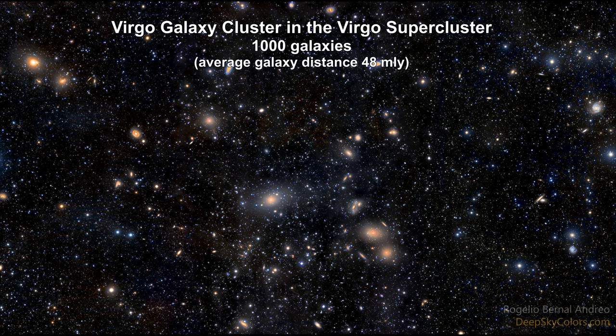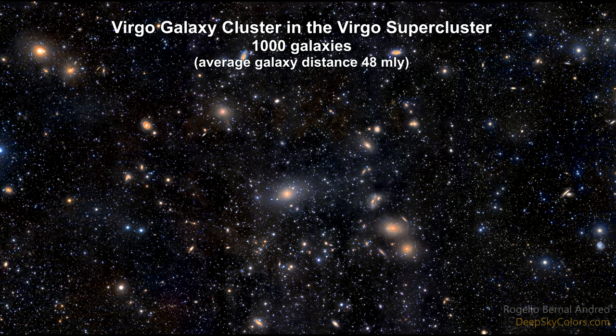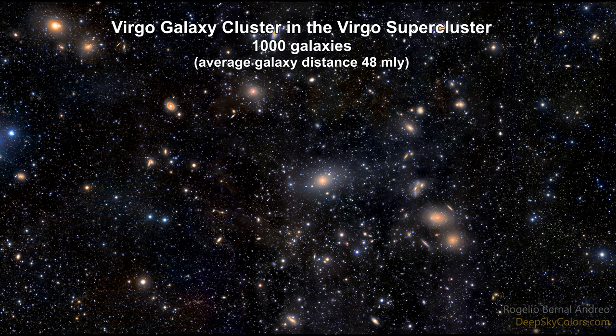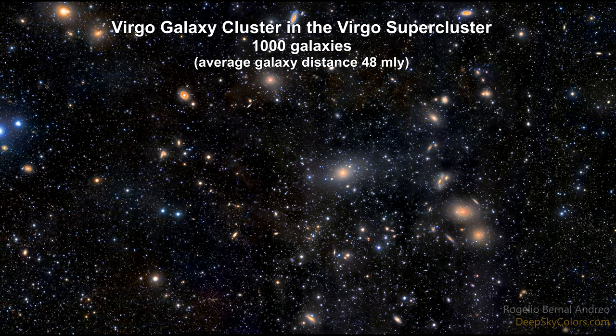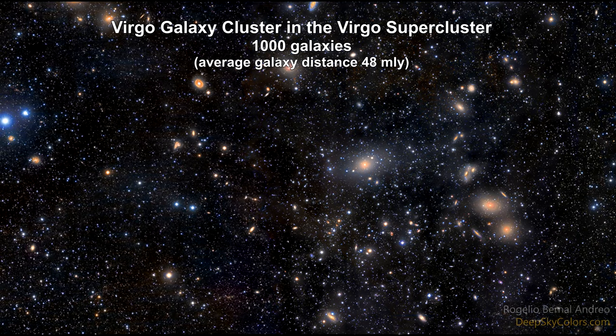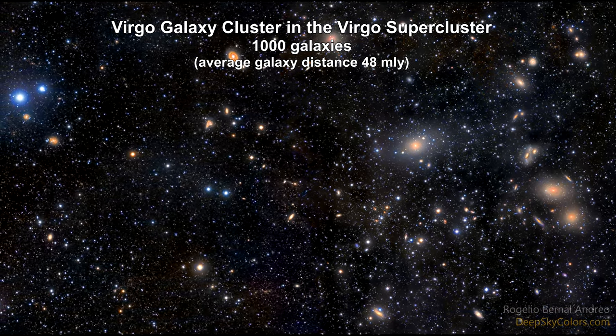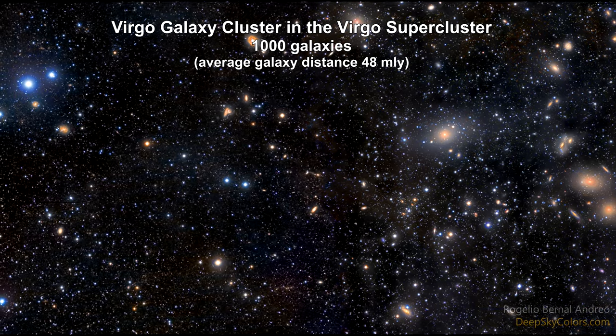In 1923, after finding the V1 Cepheid variable in Andromeda and determining that Andromeda was an entire galaxy over two million light years from our own, Hubble turned his sights on other spiral and elliptical nebulae and found that they were galaxies as well.